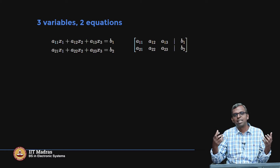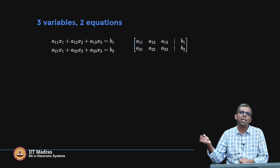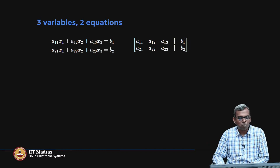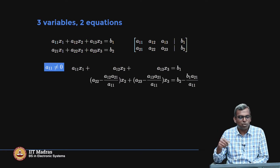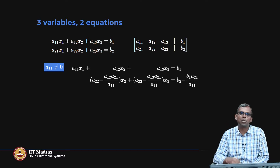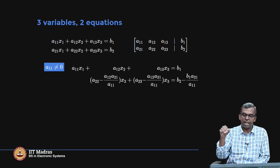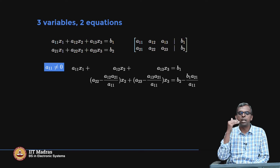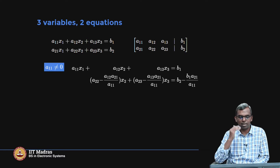We have a new situation. Can we use logic and elimination to get it to an older situation that we know already? So let us try elimination. For that we need a non-zero value, so we will assume a11 is not zero. If a11 is not zero, the first equation we retain and we do our elimination step for the second equation. Equation 2 is replaced with equation 2 minus a21 by a11 times equation 1 — that is our standard elimination step.